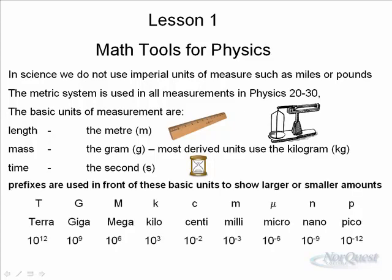And of course as I mentioned we use prefixes in front of these basic units to show larger or smaller amounts. In computers you're probably familiar with kilobytes, megabytes, gigabytes and even now terabytes. And of course with the very small we have centi. A centimeter is small. A cent is based on 100. A millimeter is very small. A milligram is very small.